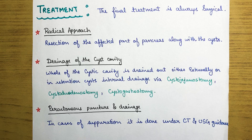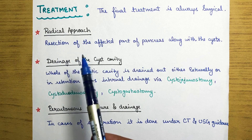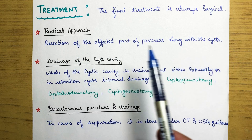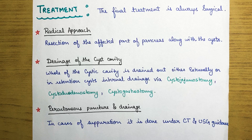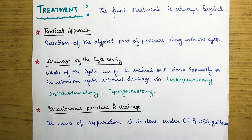There are various surgical approaches. The radical approach involves resection of the affected part of the pancreas along with the cyst. Another surgical treatment is drainage of the cyst cavity — this can be done externally or via internal drainage.